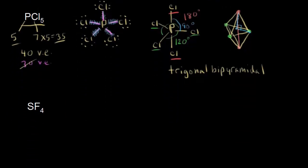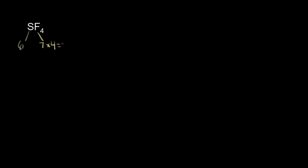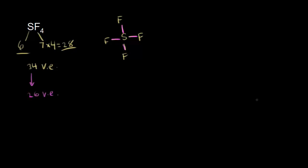Let's do another example: sulfur tetrafluoride. We start by drawing the dot structure and counting valence electrons. Sulfur is in group 6, so 6 valence electrons. Fluorine is in group 7, so 7 valence electrons; there are 4 of them. 7 times 4 is 28, plus 6 gives us 34 valence electrons total. Sulfur goes in the center because fluorine is much more electronegative, and we put the 4 fluorines around it, using 8 electrons for the bonds, leaving 26 valence electrons.